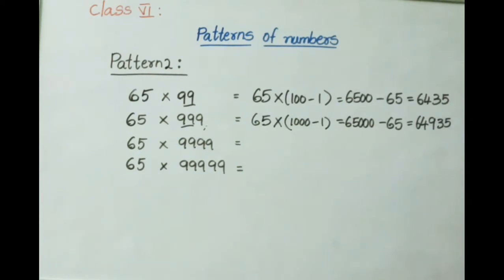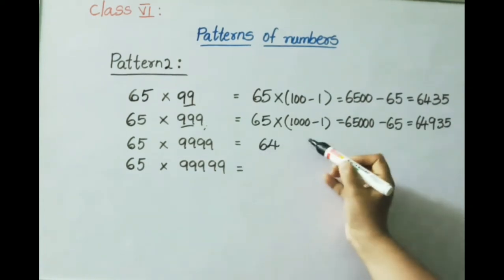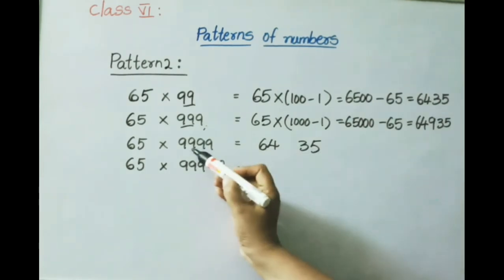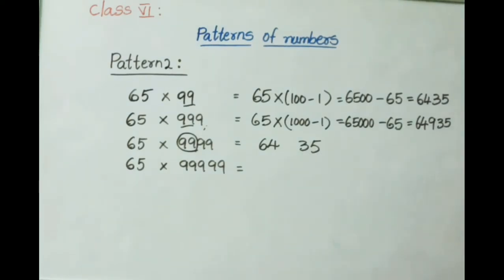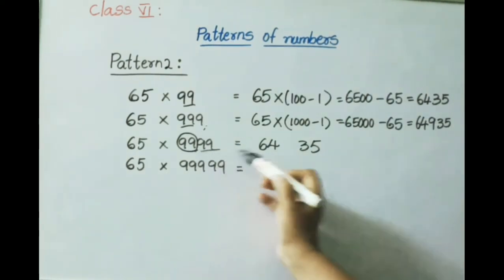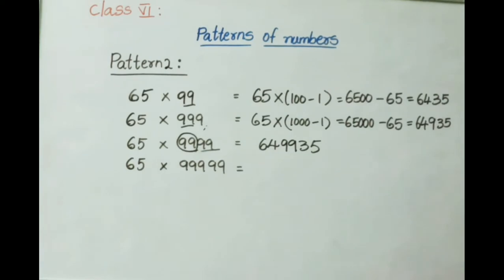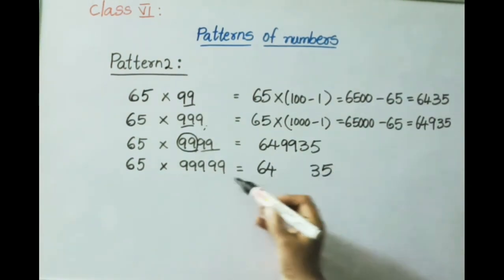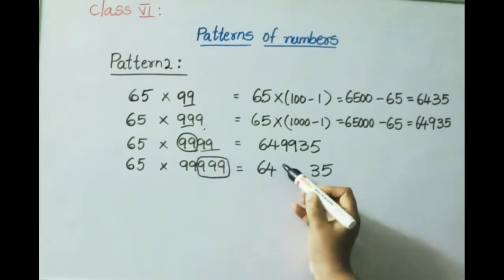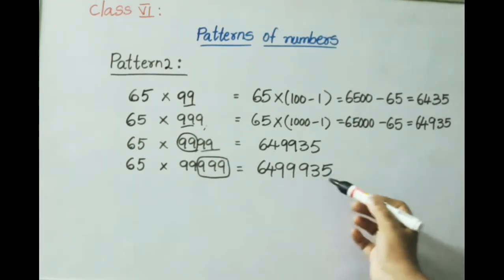By observing this pattern, we solve the remaining cases similarly. For 65 into 9999, the base digits are 6435 with two extra 9s in the middle, giving 6499935. For 65 into 99999, there are three extra 9s, giving the answer 64999935.